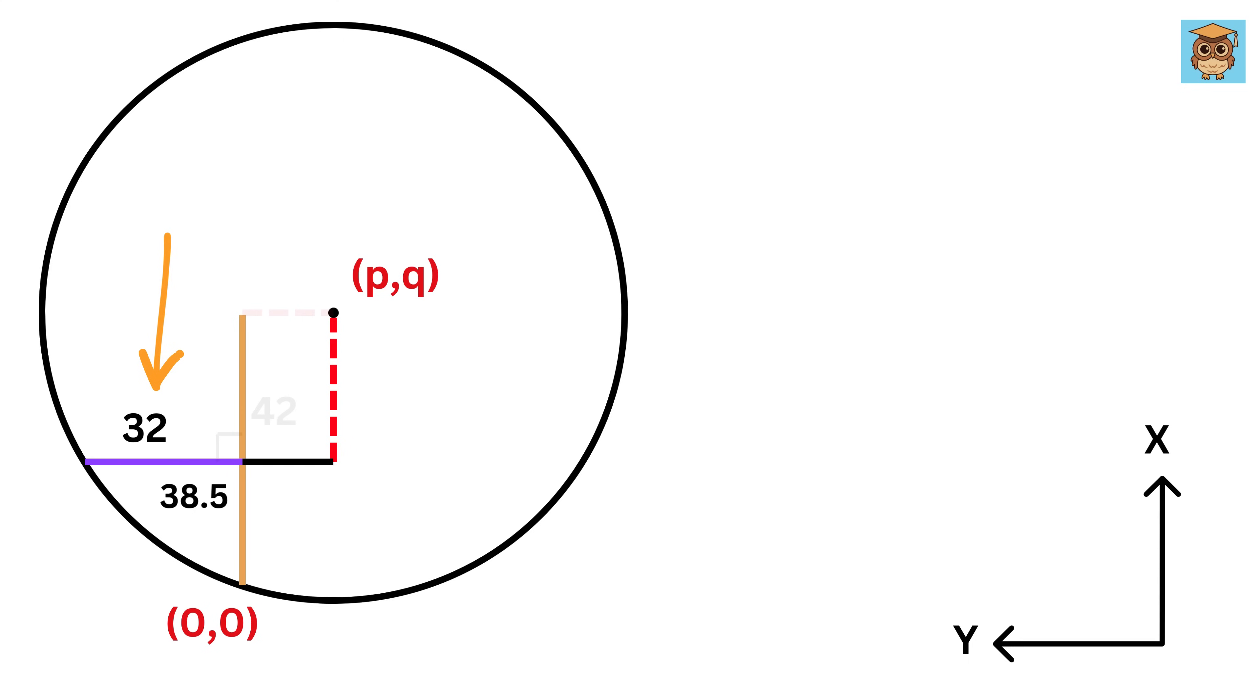Now, this is 32, and this is 38.5, so the length of this piece will be equal to 38.5 minus 32, or 6.5 units.